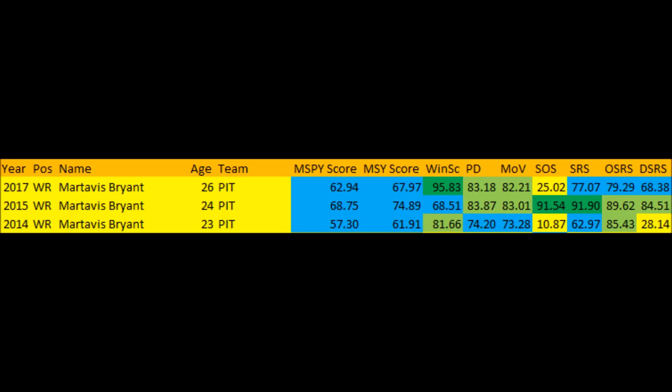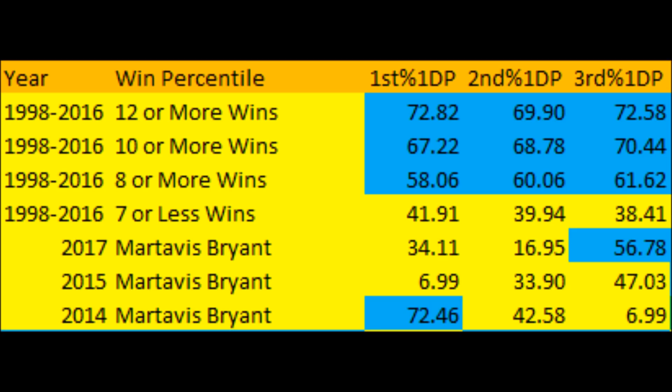Bryant also hasn't been the most efficient wide receiver. Looking at first-down conversion rate data — which deals with a receiver's ability to convert on first, second, or third down — Bryant in 2017, 2015, and 2014 has never been consistent in his ability to convert passes into first downs. This is based on over 500 wide receiver performances since the 2011 NFL season.